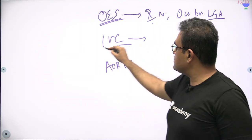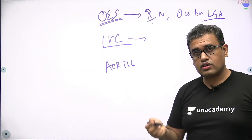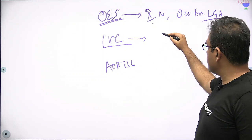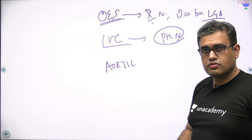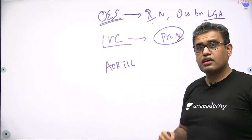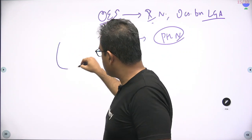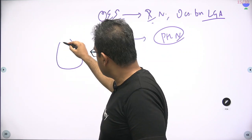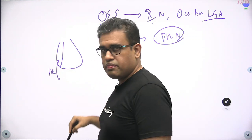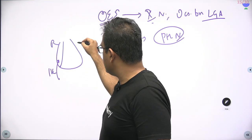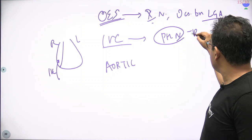The same applies for the IVC opening. The blood is going through fine, but can anything else pass? Yes — a phrenic nerve passes through, but only one side. Which phrenic nerve? Apply common sense: the heart is here, the right atrium is here, and the IVC is entering here — so it would be the right phrenic nerve.